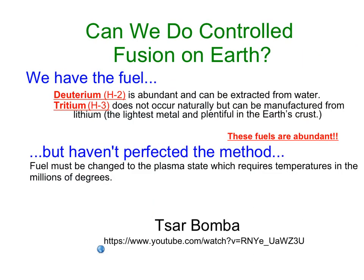Can we do controlled fusion on Earth? Well, we have the fuel — it's really simple, it's hydrogen. We need hydrogen and we have a lot of that in water. You can take water, break it down, and get deuterium and tritium, two slightly heavier isotopes of hydrogen that could then be used to start fusion. The problem is we can't control it — we don't have the environment that the sun does.